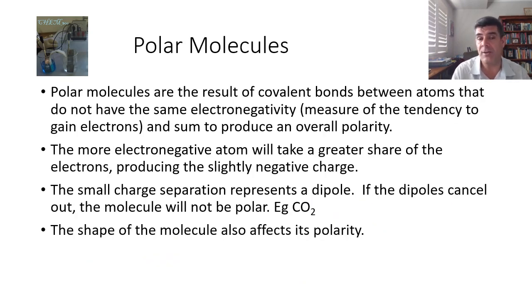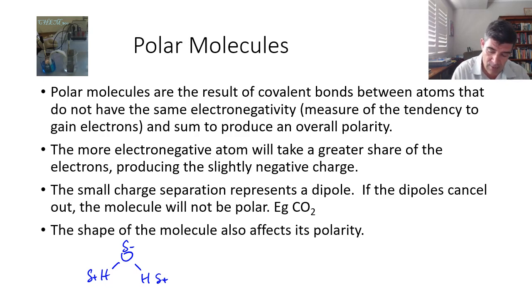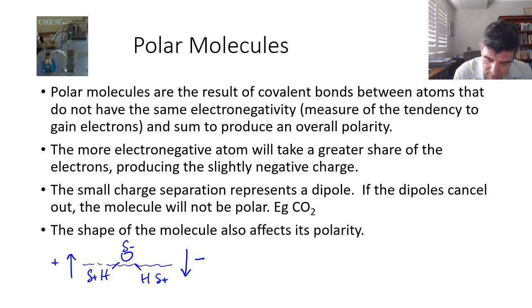Now there is a difference between polar bonding and polar molecules, and we're going to have to look at these in more detail as we go further on. Polar molecules are the result of covalent bonds between atoms that don't have the same electronegativity, and therefore produce polar bonds whose effects sum together to give an overall polarity. In water, there's a slight negative for the oxygen and slight positives for the hydrogens. If you were an electron, it would be moving effectively toward the negative charge on the oxygen side. So we have an overall polarity in this molecule — splitting it down the middle gives us a negative region and a positive region.